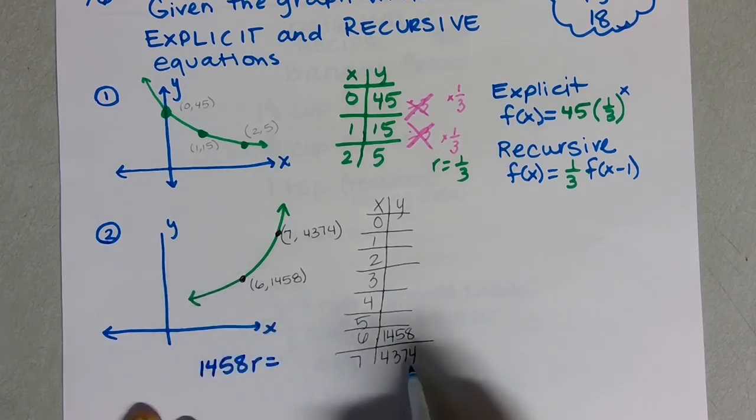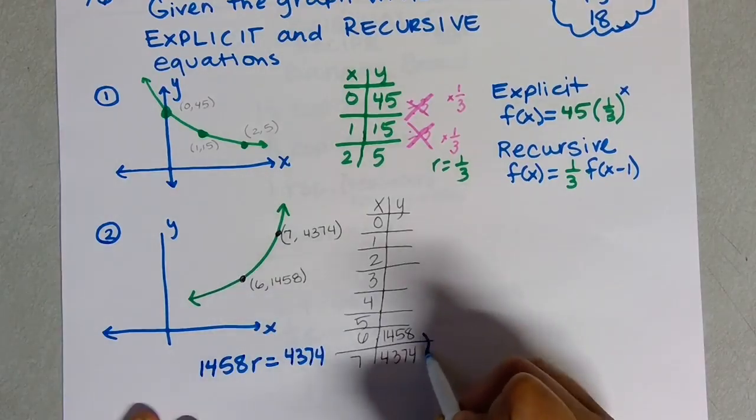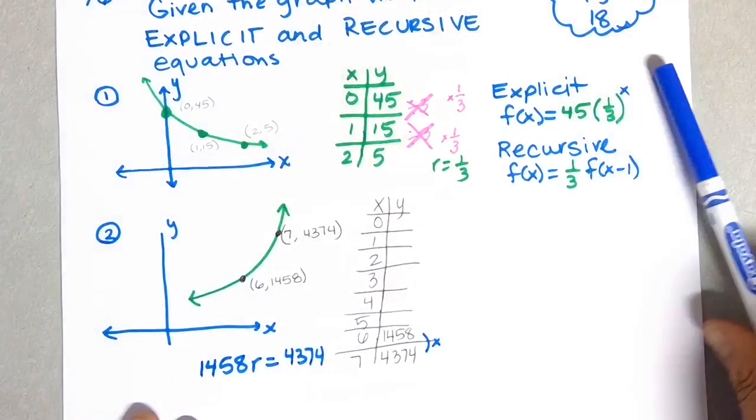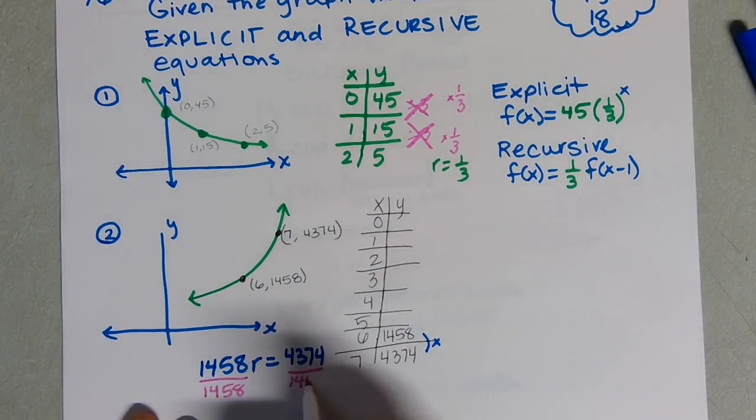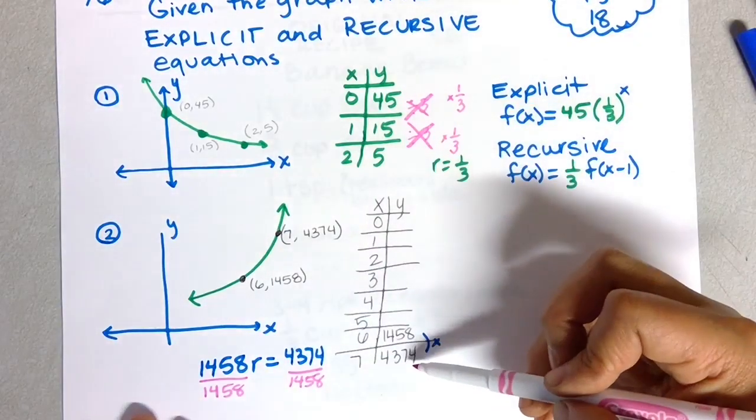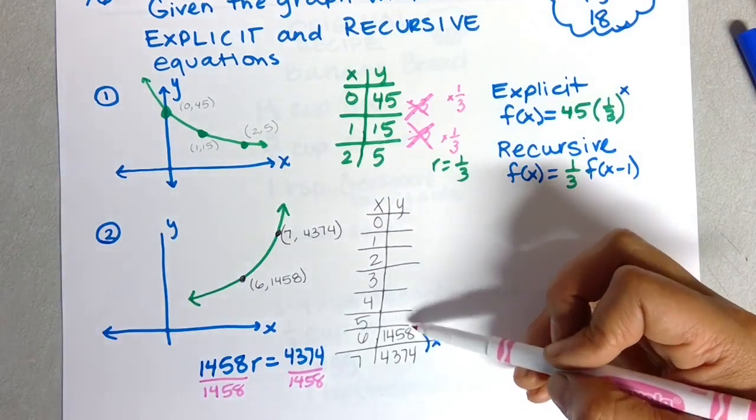The reason for that is because 1458 times some number is equal to this. So to figure out what that number is, what you're multiplying by, you divide by the second number. If you have two numbers that are right next to each other, you can take the second term and divide it by that first one.